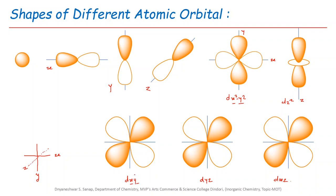In the case of dxy, the lobes are in between the x-axis and y-axis. For dyz, the axes are y-axis and z-axis, with the x-axis perpendicular to these two hypothetically. On the screen, x-axis and y-axis are on the plane and z-axis is perpendicular to these two axes. In dxz orbitals, the lobes are in between the x-axis and z-axis, with the y-axis perpendicular to the screen.